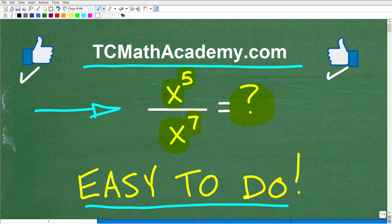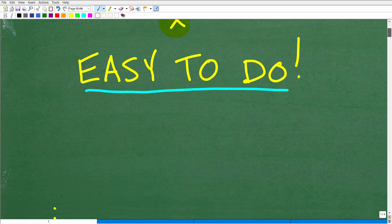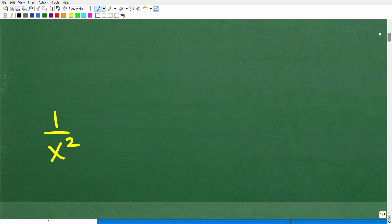Okay, so let's take a look at the answer. Again, we have x to the fifth being divided by x to the seventh. What is the answer? Well, the answer is the following: we have one over x squared. So how'd you do?